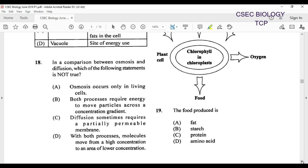We move on to question number 18. In comparison between osmosis and diffusion, which of the following statements is not true? Pay attention to not true. Osmosis occurs in living cells, that's true. Both processes require energy to move particles across a concentration gradient. This is something that we would have seen with active transport. Diffusion sometimes requires a partially permeable membrane. And with both processes molecules move from high concentration to an area of low concentration. So the best answer here is of course going to be B.